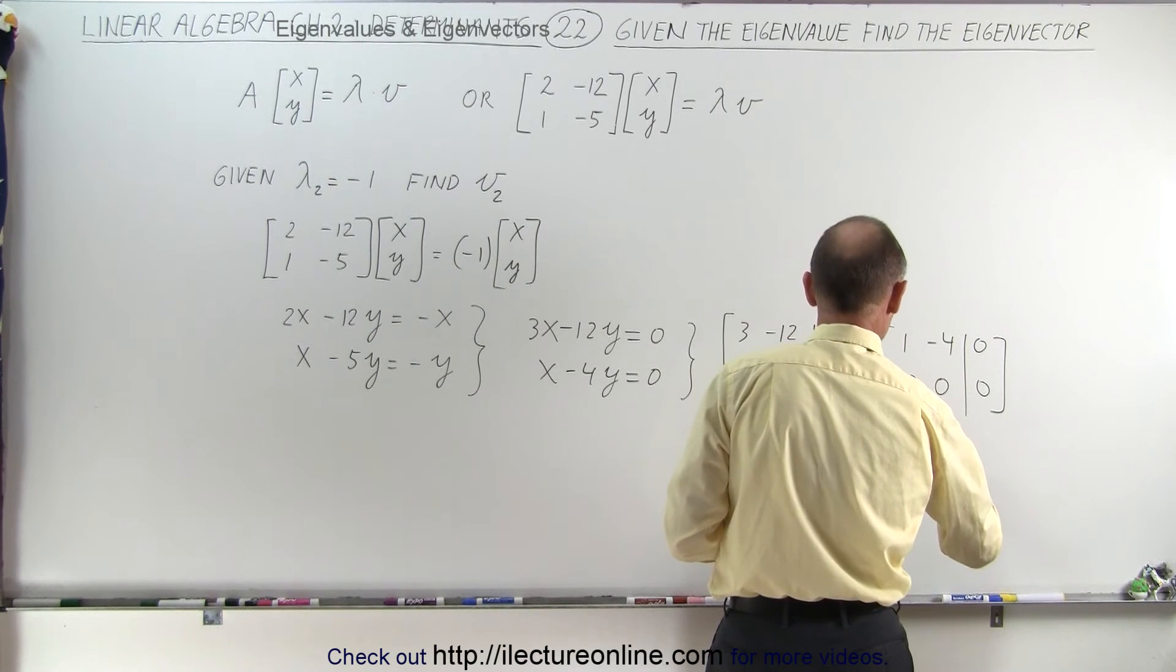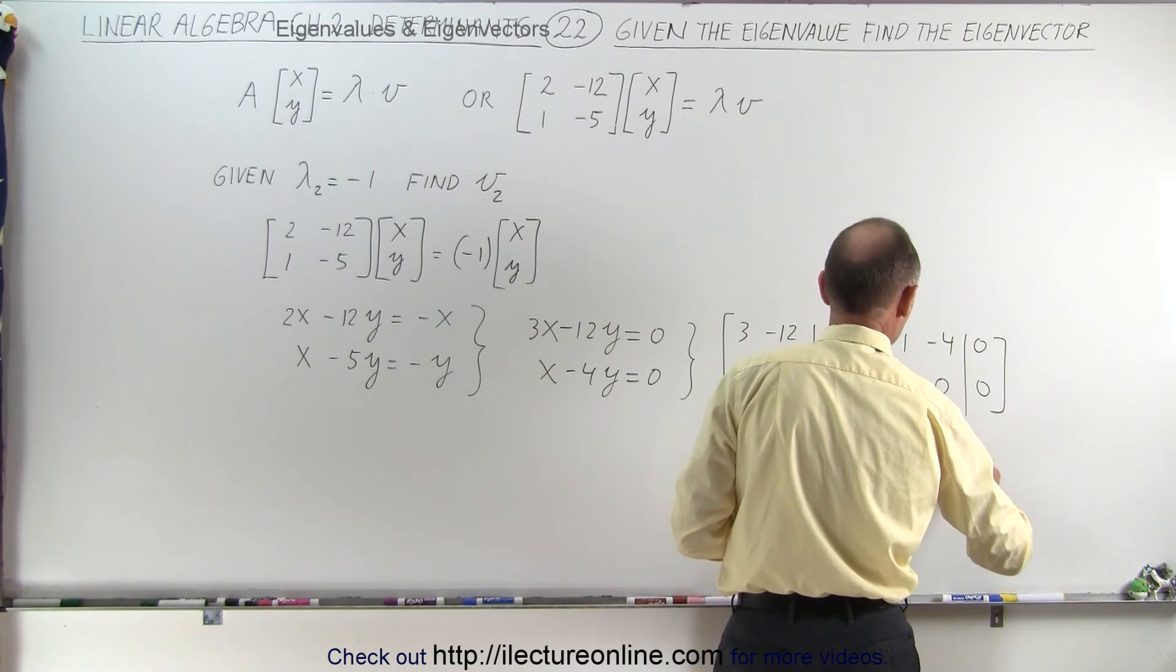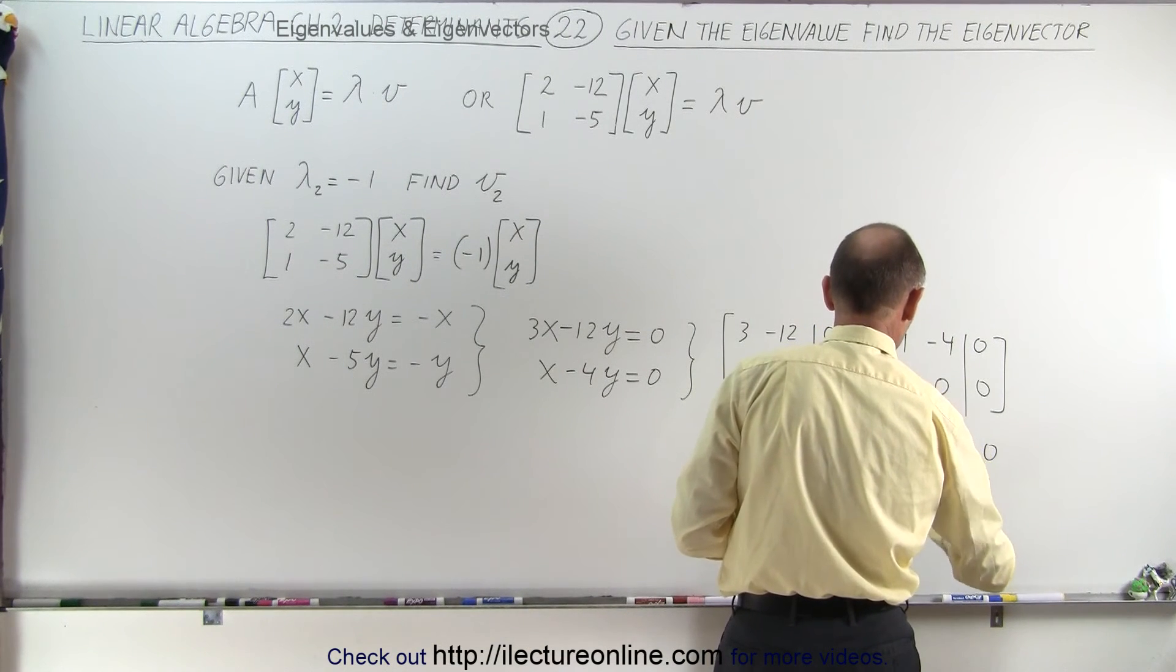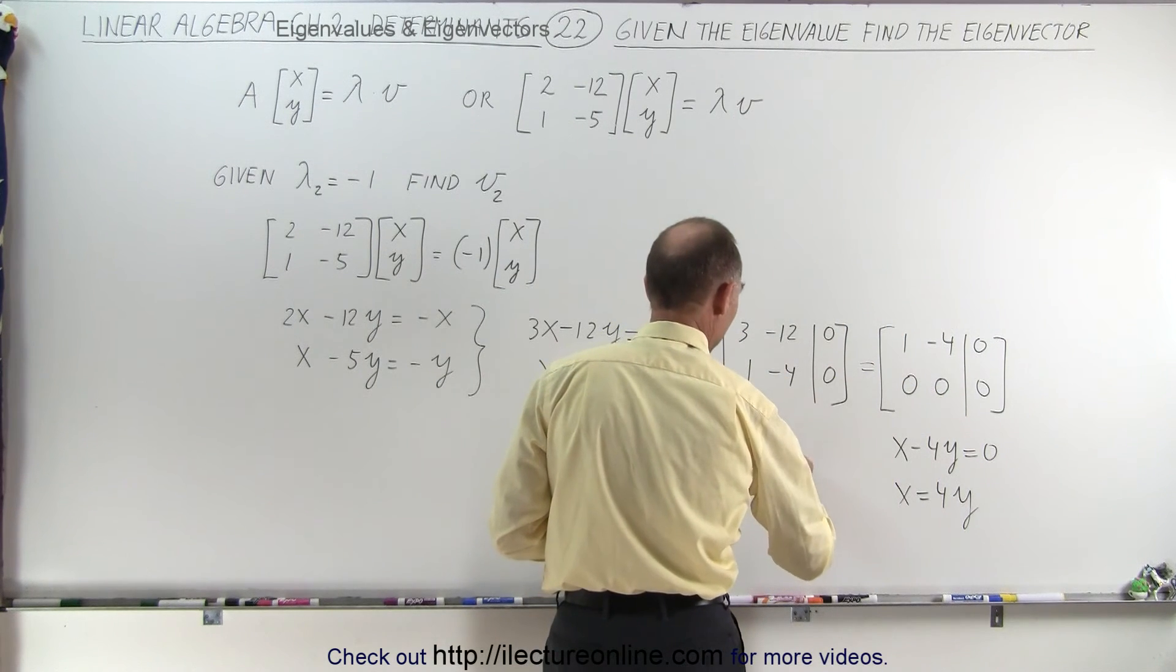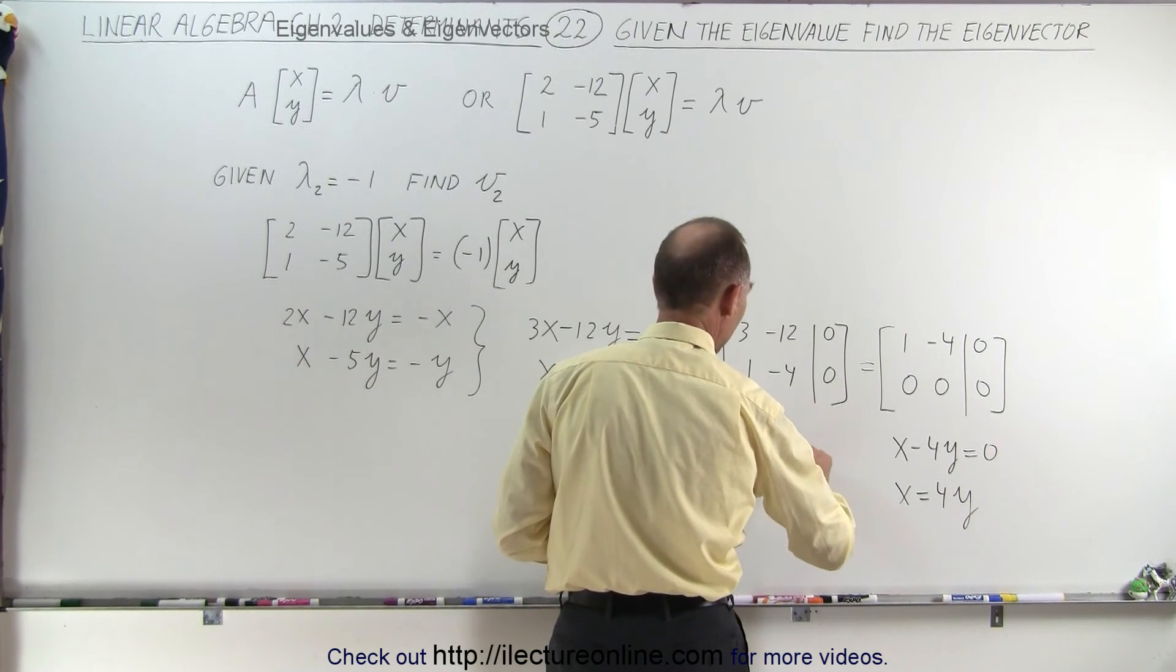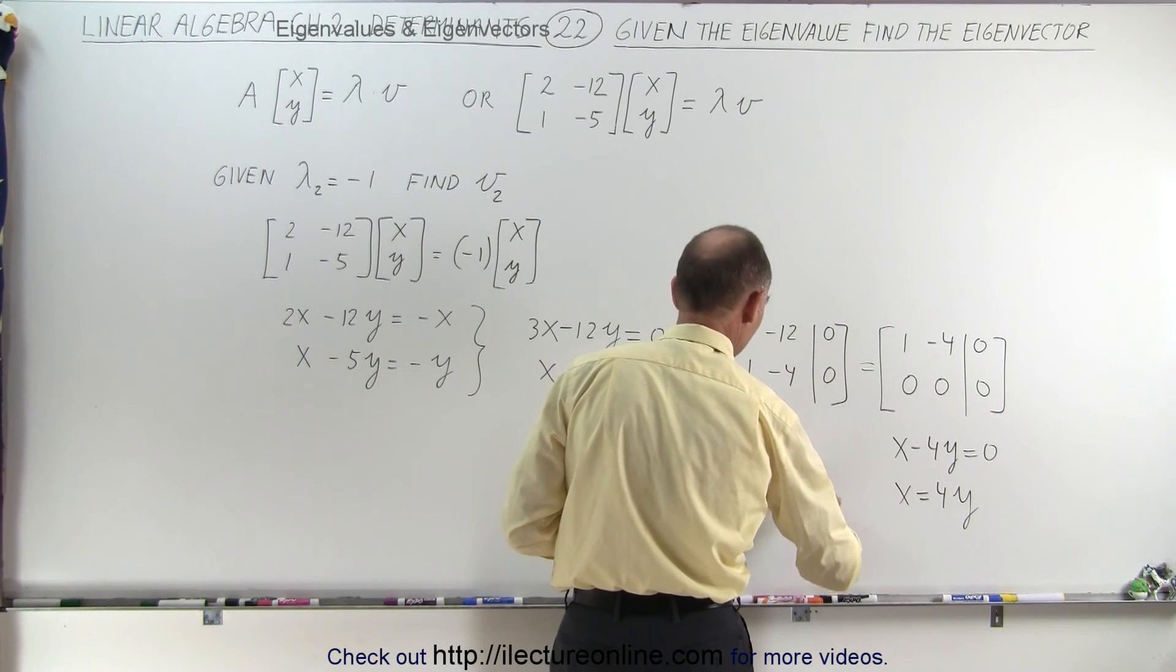This means that 1x minus 4y is equal to 0, or x equals 4y, which means that if we make y equal to 1, then x is equal to 4.